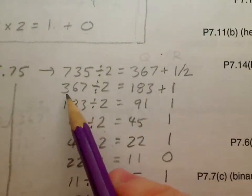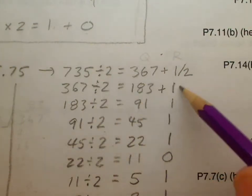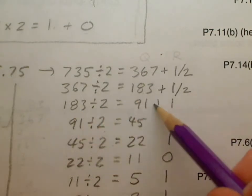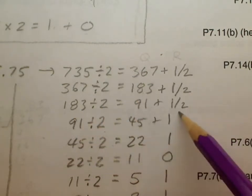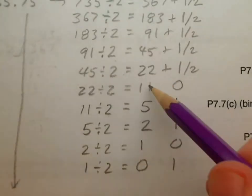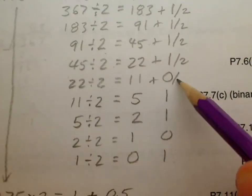So you can see that if you do 367 divided by 2, it's 183 plus a half. And so you keep doing that all the way down here. We're always taking this integer part of it and dividing it by 2 in each case.